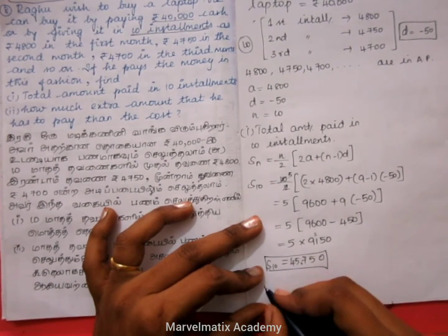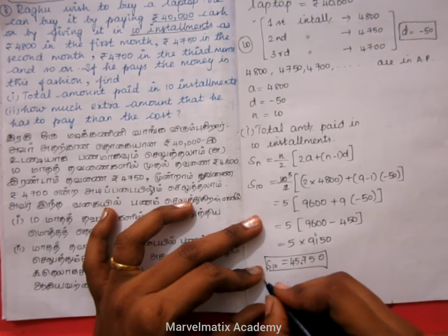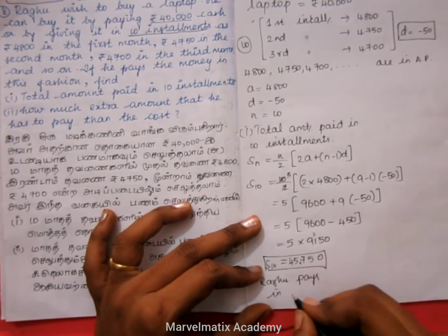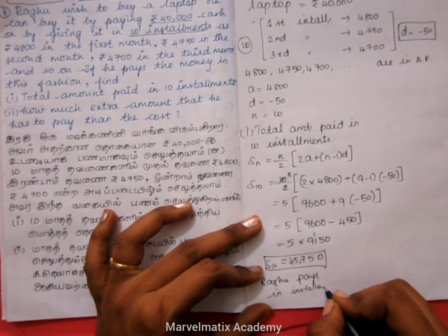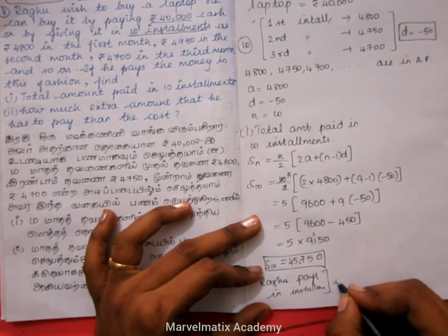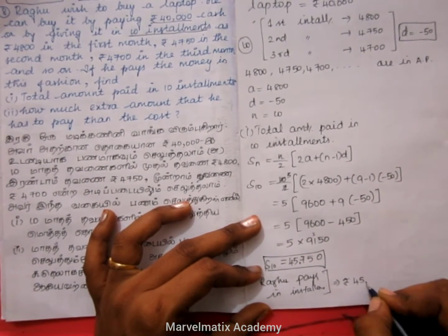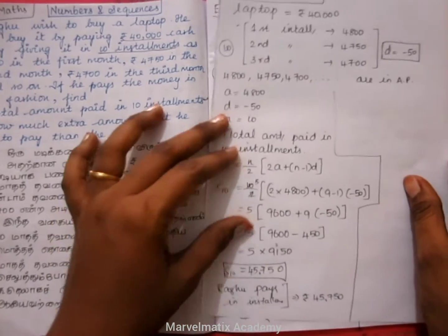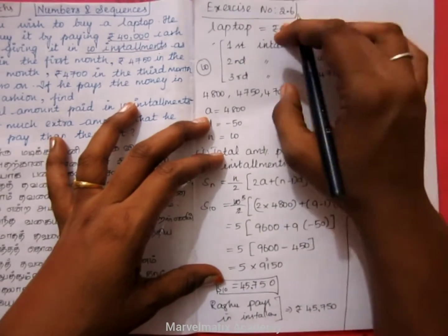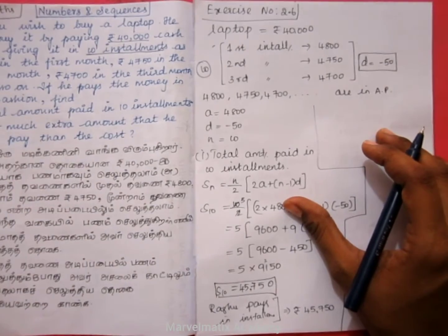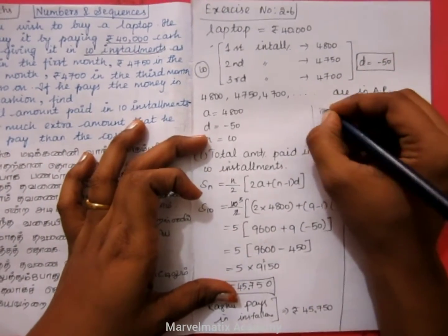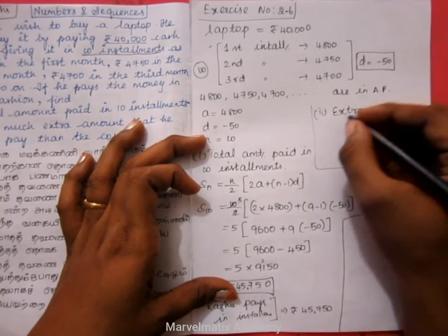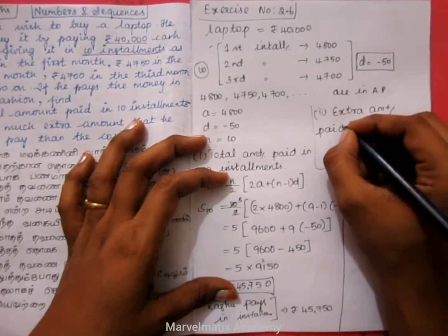Which is equal to Rs. 45,750. This is the total amount of money paid by Raghu in 10 installments.